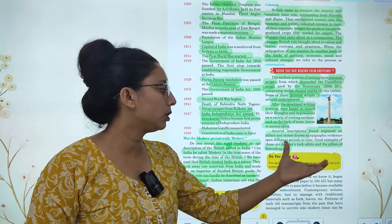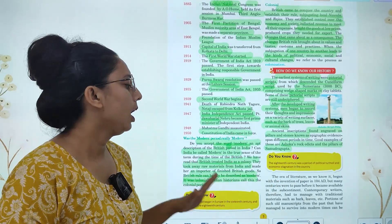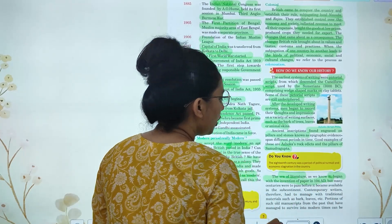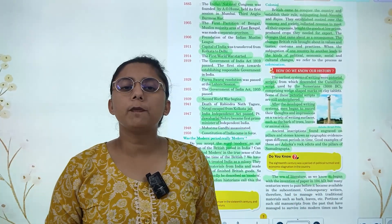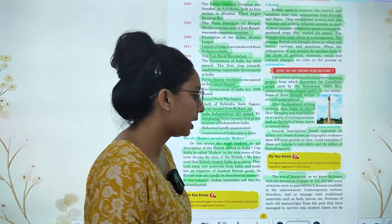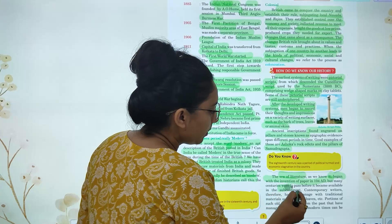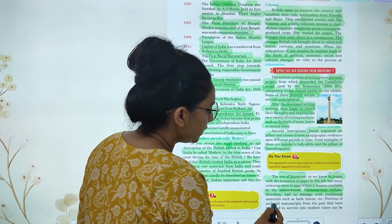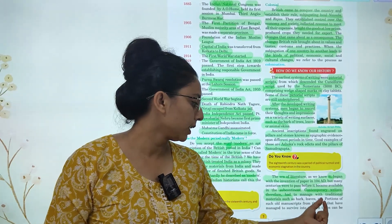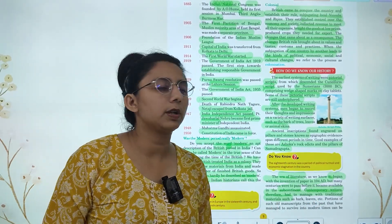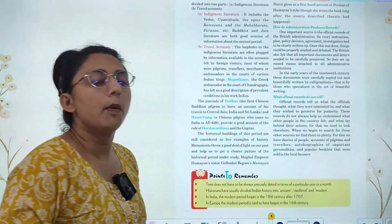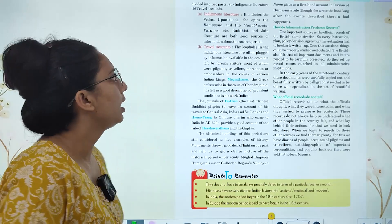The era of literature, as we know, begins with the invention of paper. The invention of paper started around the 1st to 2nd century, and many centuries passed before it became available in the subcontinent. Contemporary writers therefore had to manage with traditional materials. The portions of old manuscripts which we find from the past are what survive in modern times.